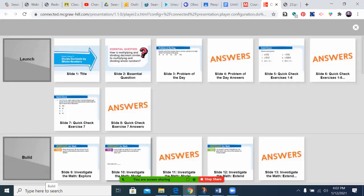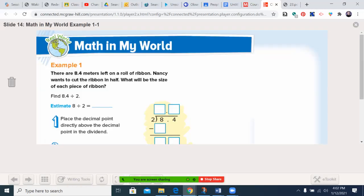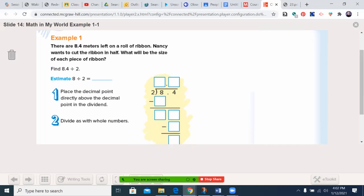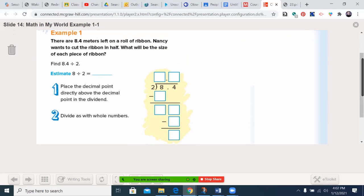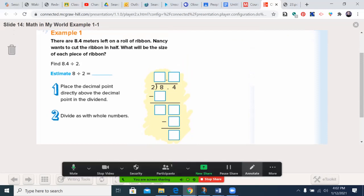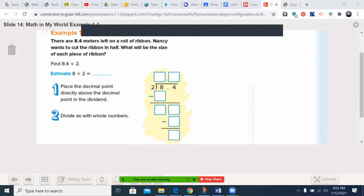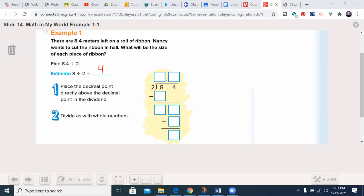Let's go right into the book here on page 443. Example Basic. There are 8 and 4 tenths meters left on a roll of ribbon. Nancy wants to cut the ribbon in half. What will be the size of each piece of ribbon? I'm going to bring out my annotation tool here. And first we'll estimate. The nearest 8.4 to the nearest total number is closer to 8 divided by 2, 4. So my answer when I'm done should be near 4.